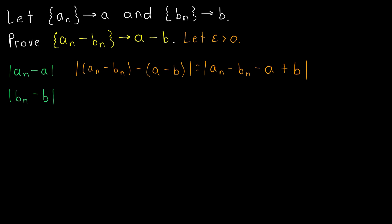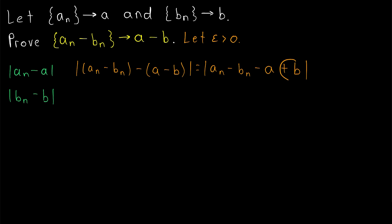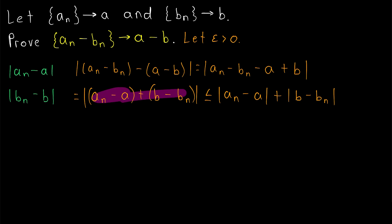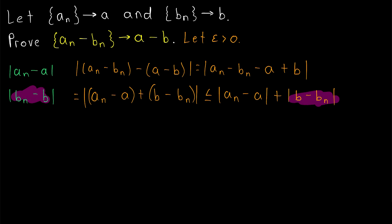We may begin by distributing the negative, which gives us the absolute value of an minus bn minus a plus b. Since we're hoping to relate this to those expressions, we move the minus a over with an and move the plus b over with minus bn. Simply rearranging gives us the absolute value of (an minus a) plus (b minus bn). Putting these in parentheses makes it clear that we can apply the triangle inequality, which tells us that the absolute value of the sum of two terms is less than or equal to the sum of their absolute values. So, this is less than or equal to the absolute value of an minus a plus the absolute value of b minus bn.